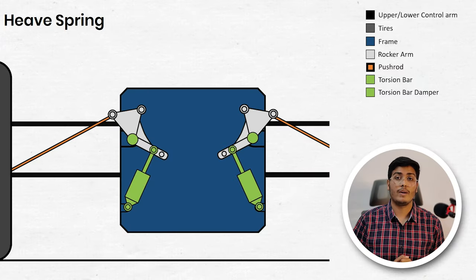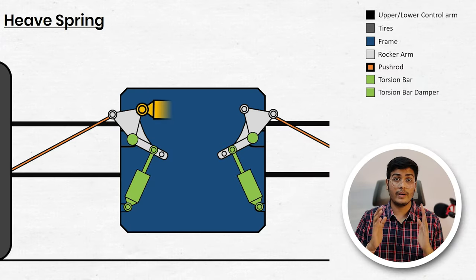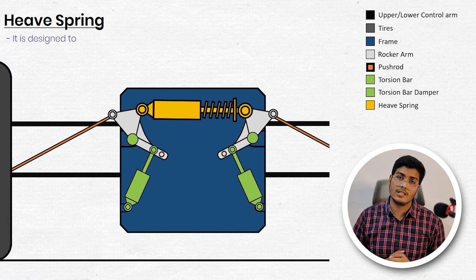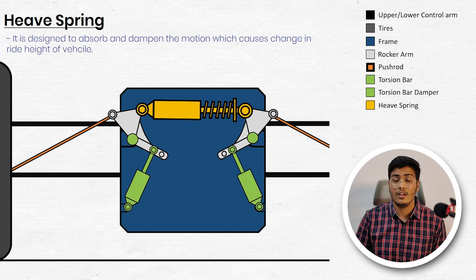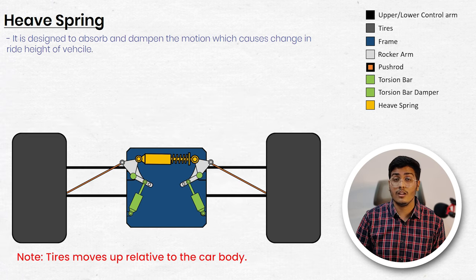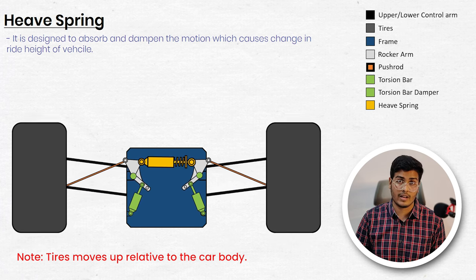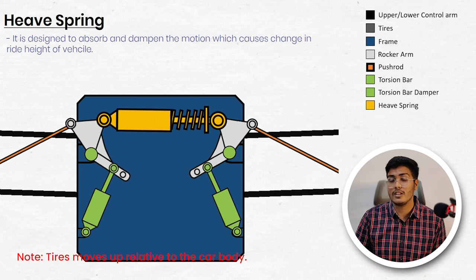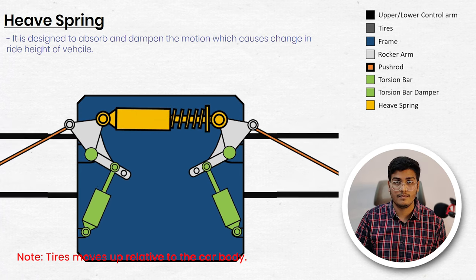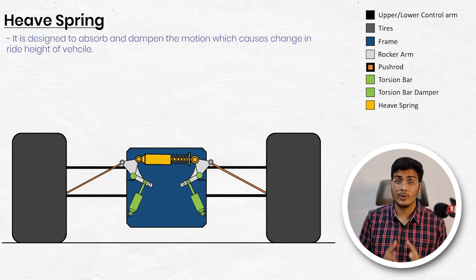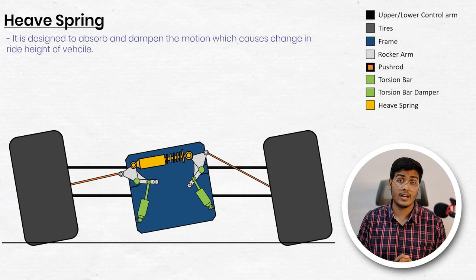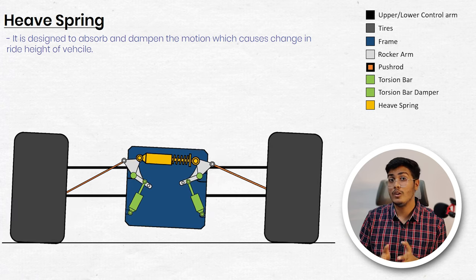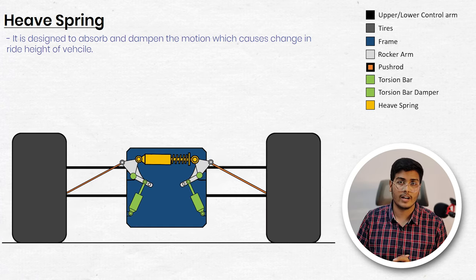The next component used in this geometry is the heave spring. It is mounted between two rocker arms. The role of the heave spring is very simple — it provides an extra resisting force in order to maintain the ride height of the vehicle. During the pitching condition, when the tire moves up it will rotate the rocker arm, and the rocker arm will compress the heave spring. This heave spring will resist the compression and maintain the ride height. During roll condition, the rocker arms move together so the heave spring never gets extended or compressed.